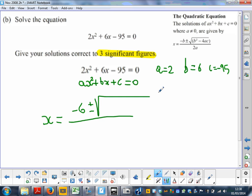b squared, so 6², minus 4 times a times c, which is -95, over 2 times a, so 2 times 2.